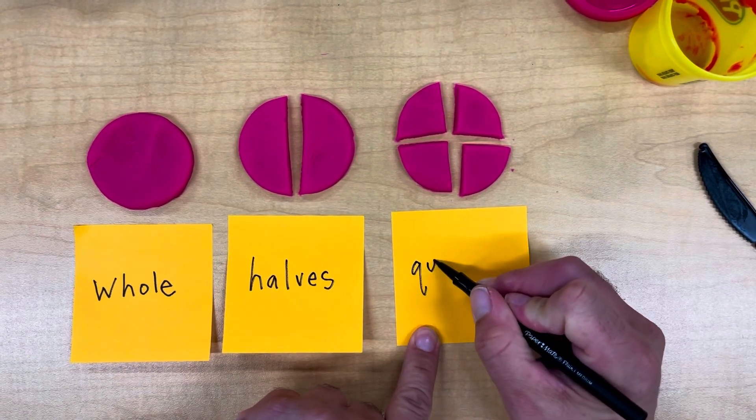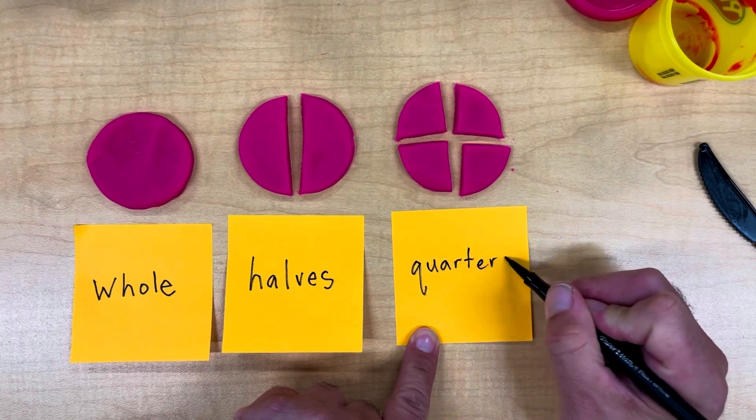When you cut a shape into four equal pieces, then you have quarters.